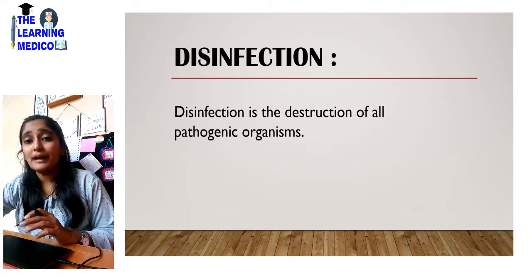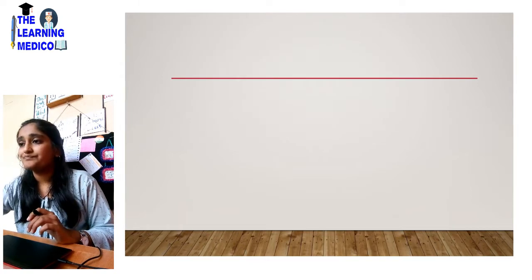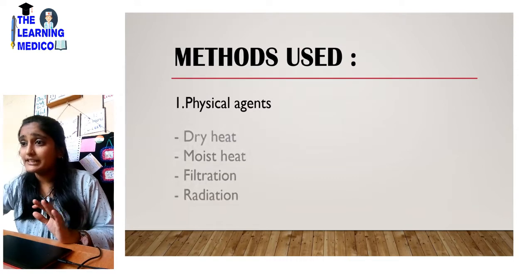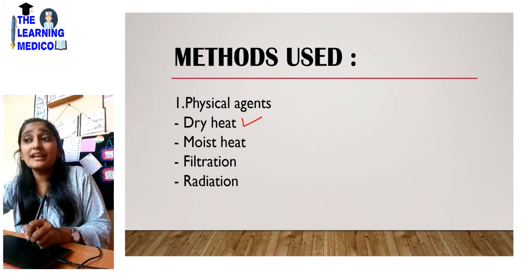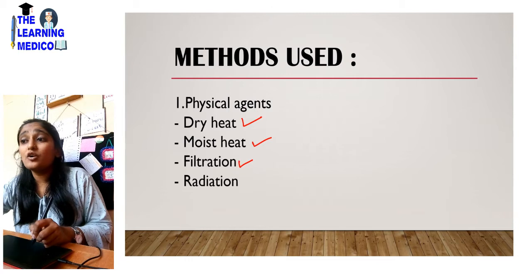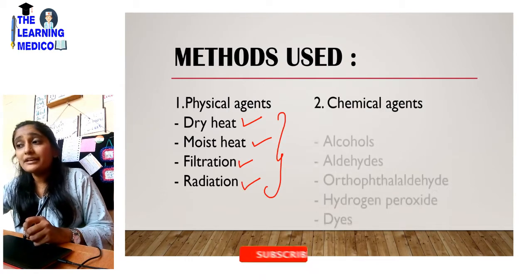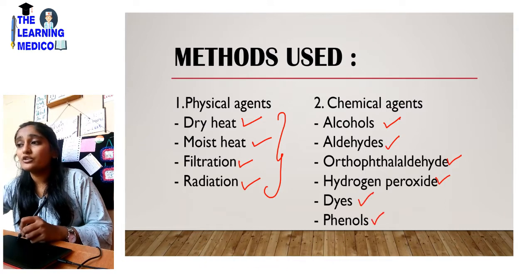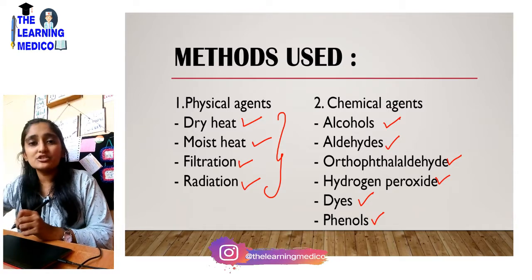Now we will look at the methods. First are physical agents: we will use dry heat, moist heat, filtration, and radiation. We will see all of these in detail in this video. For chemical agents, we will use alcohol, aldehydes, ortho-aldehydes, hydrogen peroxide, dyes, and phenols. We will see all of these in Part 4.